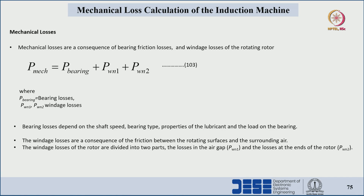Mechanical losses are a consequence of bearing friction losses and windage losses of the rotating rotor. The total mechanical loss can be divided into three parts: first, bearing loss; second, windage losses with respect to the air gap; and third, windage losses with respect to the ends of the rotor.